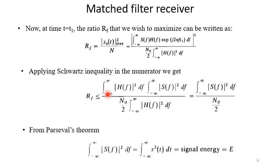Now this |H(f)|² integration and this one they are equal and they are non-zero. So we can cancel these two and we get integration |S(f)|² df divided by N_0/2.